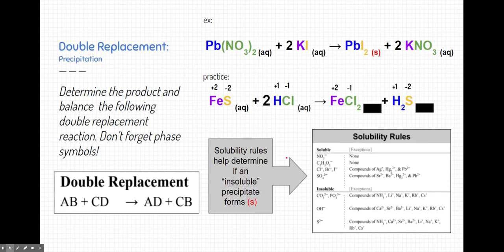Now what about these phase symbols? Well, I'm going to use the solubility rules to determine what they are. Chlorine is soluble and iron is not an exception to that. Sulfur, on the other hand, is insoluble and hydrogen is not an exception to that. Therefore, this hydrogen sulfide is what determines this to be a precipitation double replacement reaction.